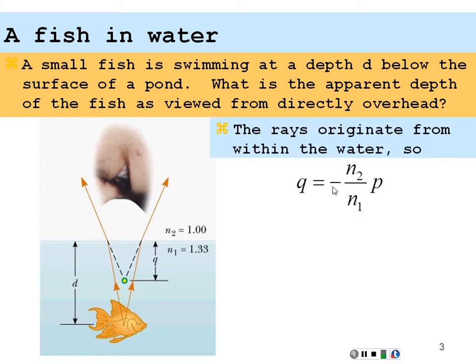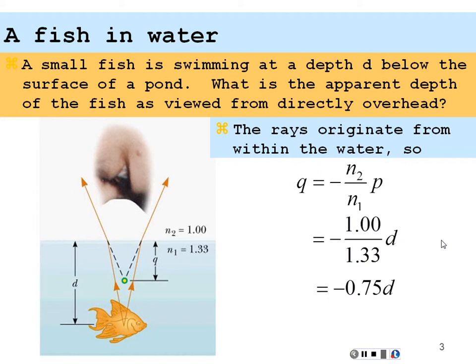The image distance will be equal to negative N2 over N1 times the object distance. N1 is the index of the water and N2 is the index of the air, because the rays are originating from the fish inside the water. That gives us negative 1 over 1.33 times d, which equals negative 0.75d. Negative meaning we're on the same side as the originating object, so we have a virtual image that is three quarters of the actual object distance.